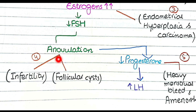Because ovulation does not occur, follicles take on a cyst-like appearance. These follicular cysts are actually abnormal follicles that have failed to ovulate, so in the ovaries of polycystic ovarian syndrome you will see multiple follicular cysts.